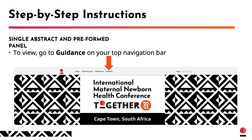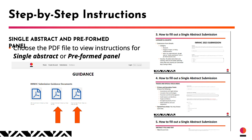We have detailed instructions on how to submit your abstract and pre-formed panel on the online system. To view them, click on the guidance tab on the navigation bar and choose a PDF file to download instructions for either the single abstract or the pre-formed panel. You will then see step-by-step instructions with screenshots to help you navigate through the process, from clicking the submissions button all the way through to submitting your abstract or pre-formed panel for review.